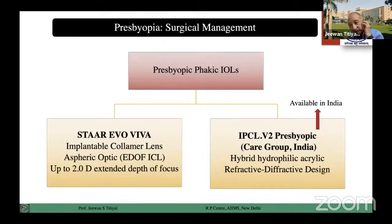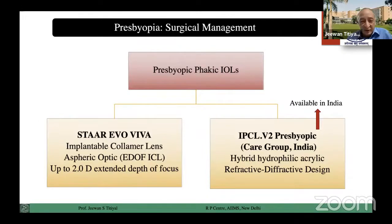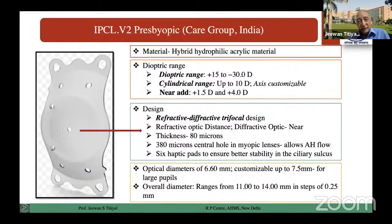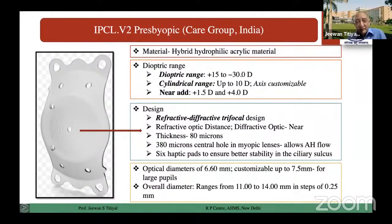We do have two lenses available in clinical practice. In India, we have IPCL presbyopic from CARE Group, which is a hybrid hydrophilic-acrylic-refractive design. We also have the Star EVO Viva lens, which is basically aspheric optics, E-Dolph design, which has correction up to 2 diopters in the extended depth of focus — this may have its own advantage with this particular optics.